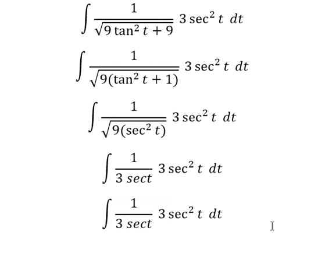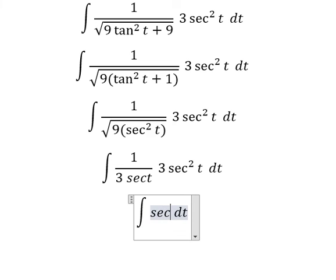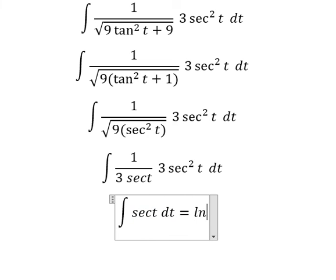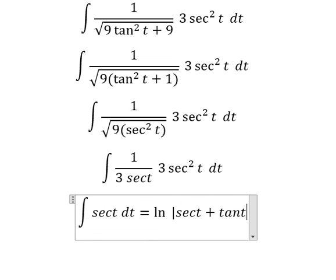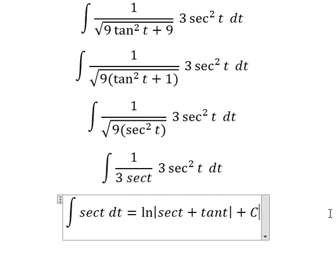Now we need to simplify, so we have sec(t). The integral of this gives us ln of the absolute value of sec(t) plus tan(t), and I will add the constant C.